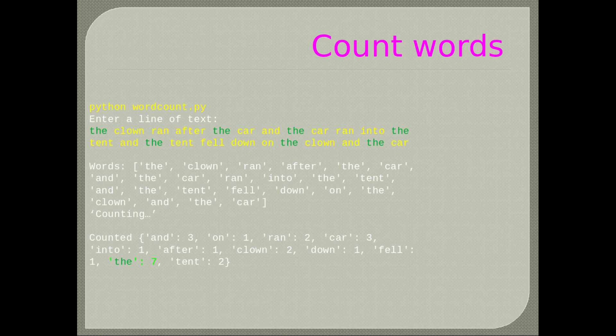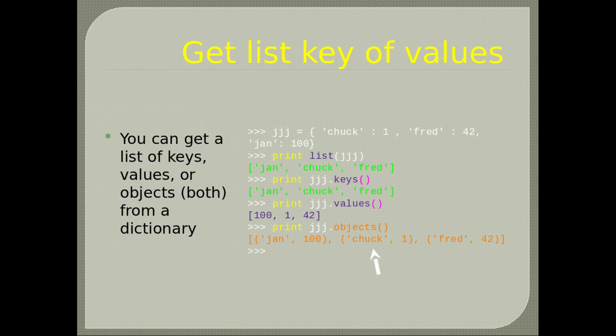Get list of keys or values: you can get a list of keys, values, or key-value pairs from a dictionary. We printed the keys John, Chuck, and Fred, then the values, then all of the pairs.